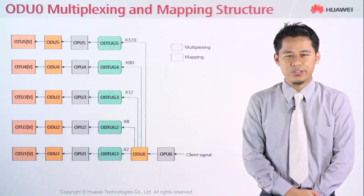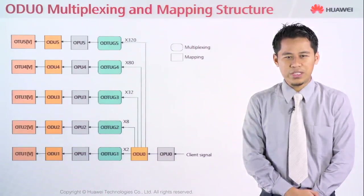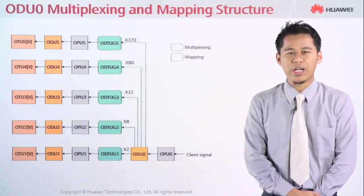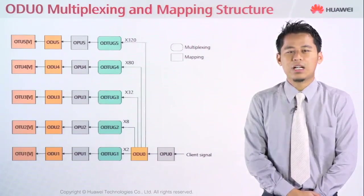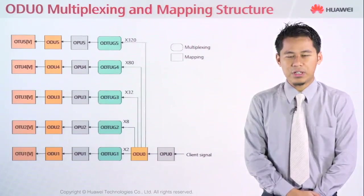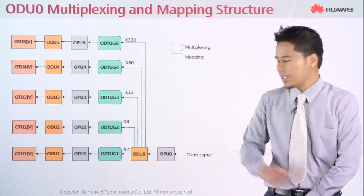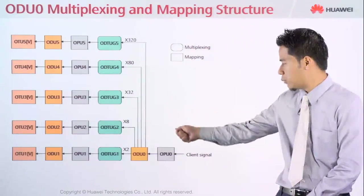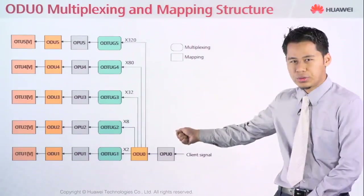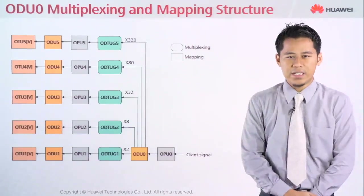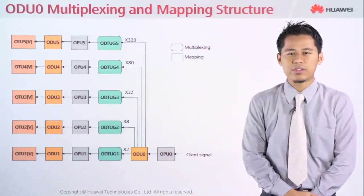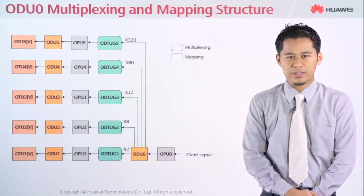The first one will be ODU0. In order to achieve OTU1, OTU2, OTU3, OTU4, and OTU5, they need to multiply several frames. As you can see, they will multiply with 2, with 8, with 32, and so on.